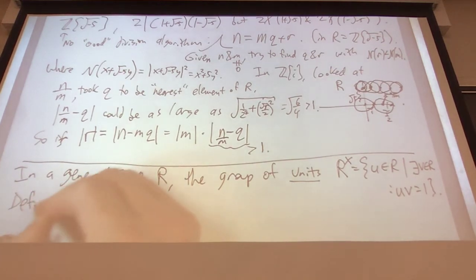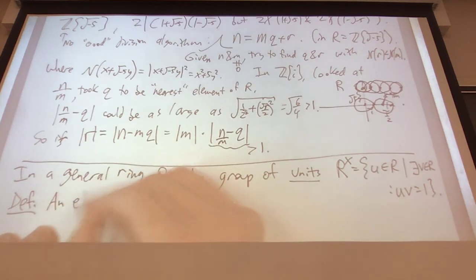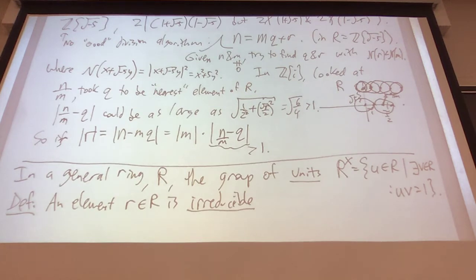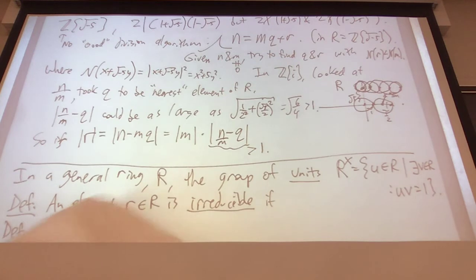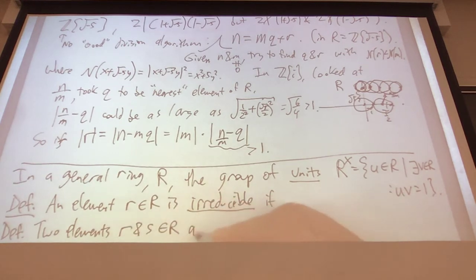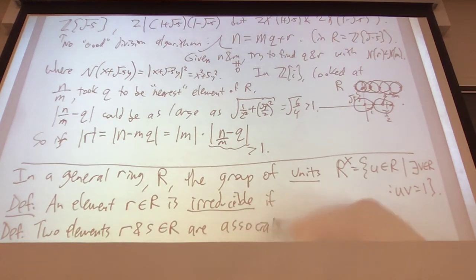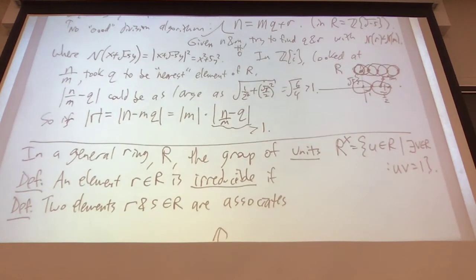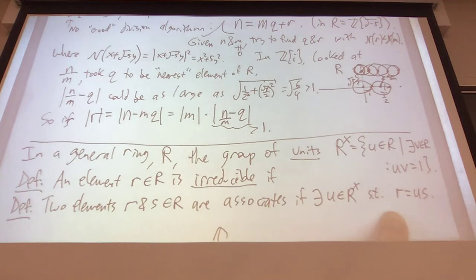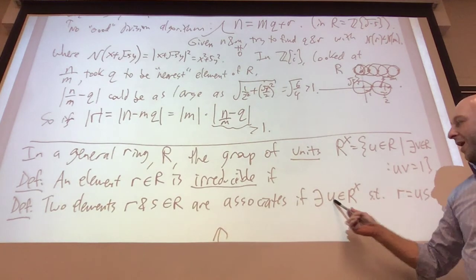Here are a few more definitions. Two elements R and S in a ring are called associates if there exists a unit U in the unit group such that R = U·S. If two numbers differ by a unit, they're associated. Like 7 and -7 in the integers — negative one is a unit, so 7 and -7 are associated. They're not the same number, but they have the same absolute value.